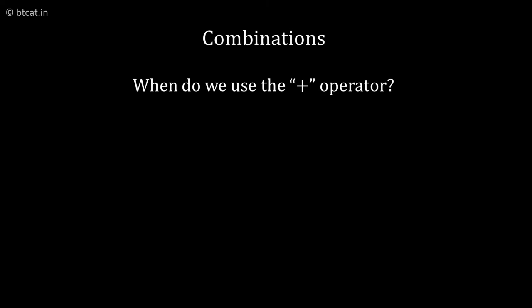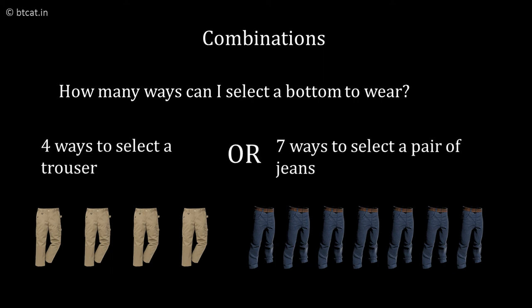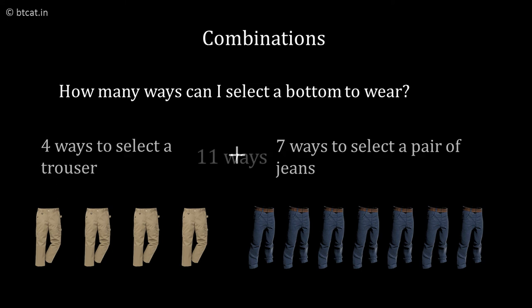The question is when does the plus sign come? The plus sign comes when the events are either/or events. Either this or this—then we put in a plus sign. For example, if I have to dress myself and there are 4 trousers and 7 jeans available and I have to wear one bottom out of them, how many ways can I choose? The answer is 4 + 7, which is 11 ways.